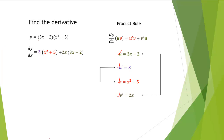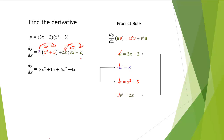Now we'll distribute. We'll distribute 3 among the first term, so we have 3x squared. 3 times 5 is 15. Next we'll distribute 2x among the second term, so we have 2x times 3x, which is 6x squared. And we have 2x times negative 2, which is negative 4x.